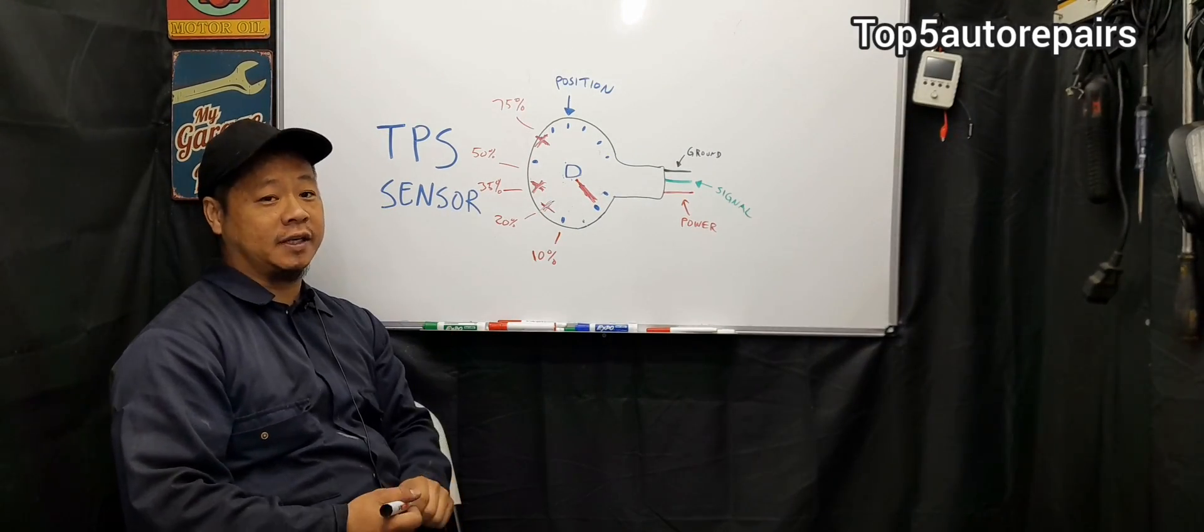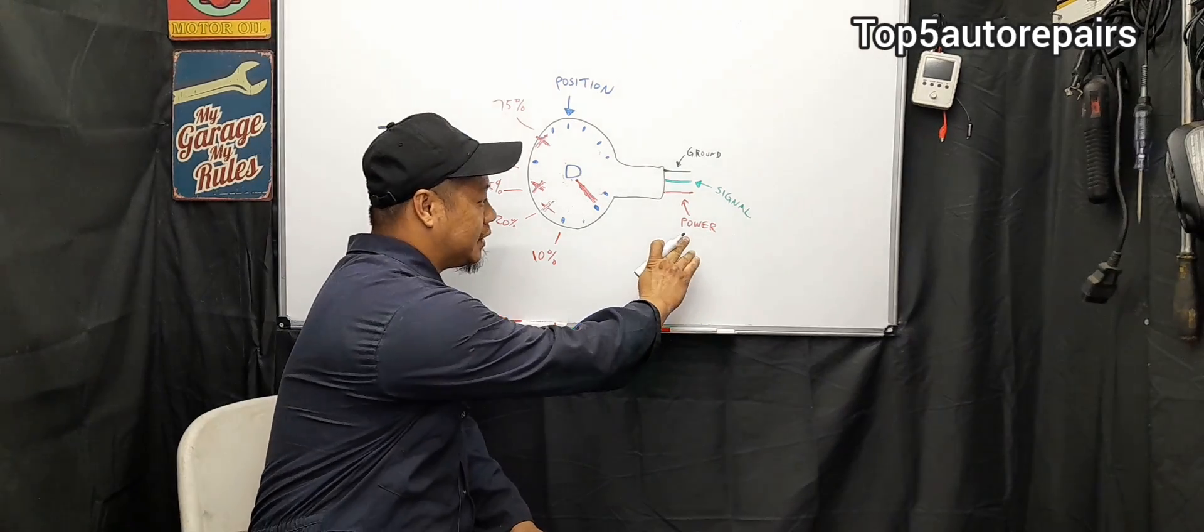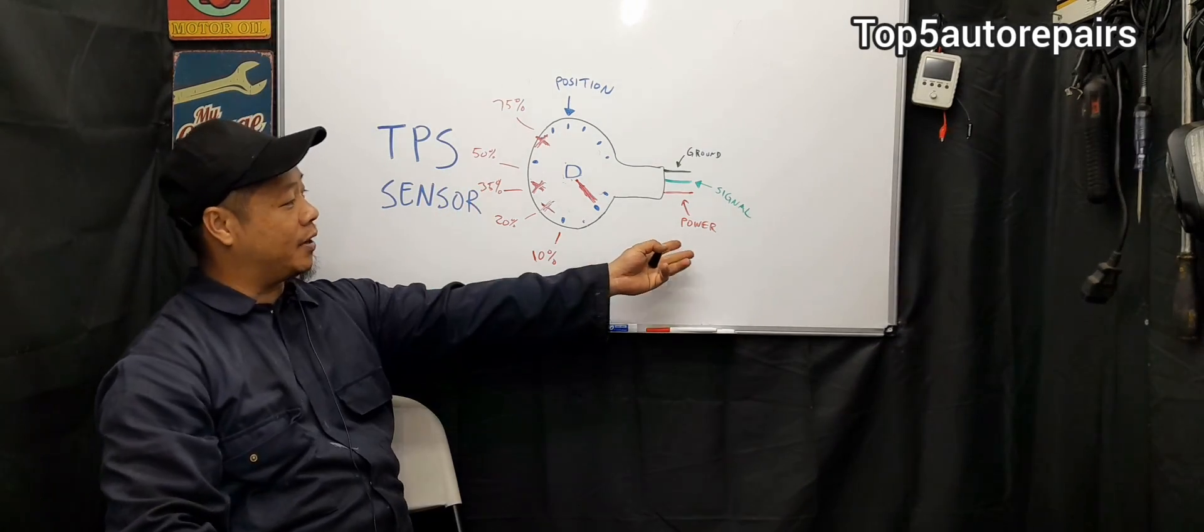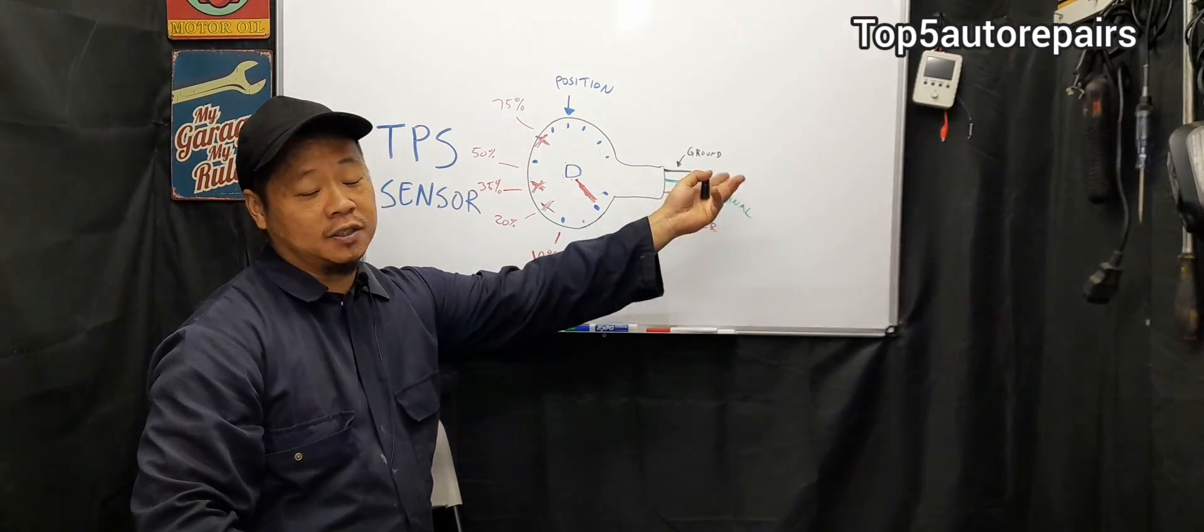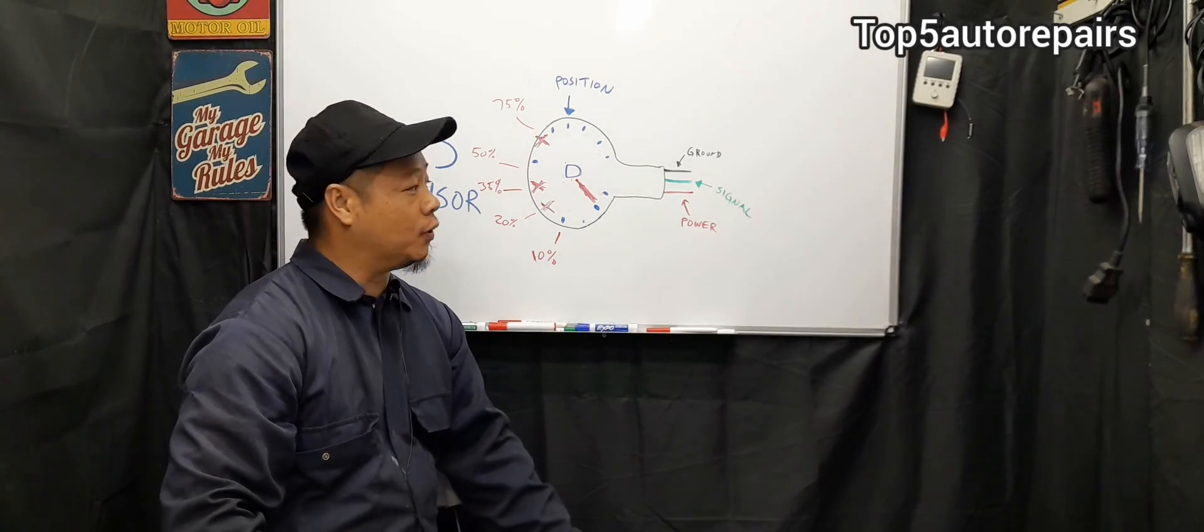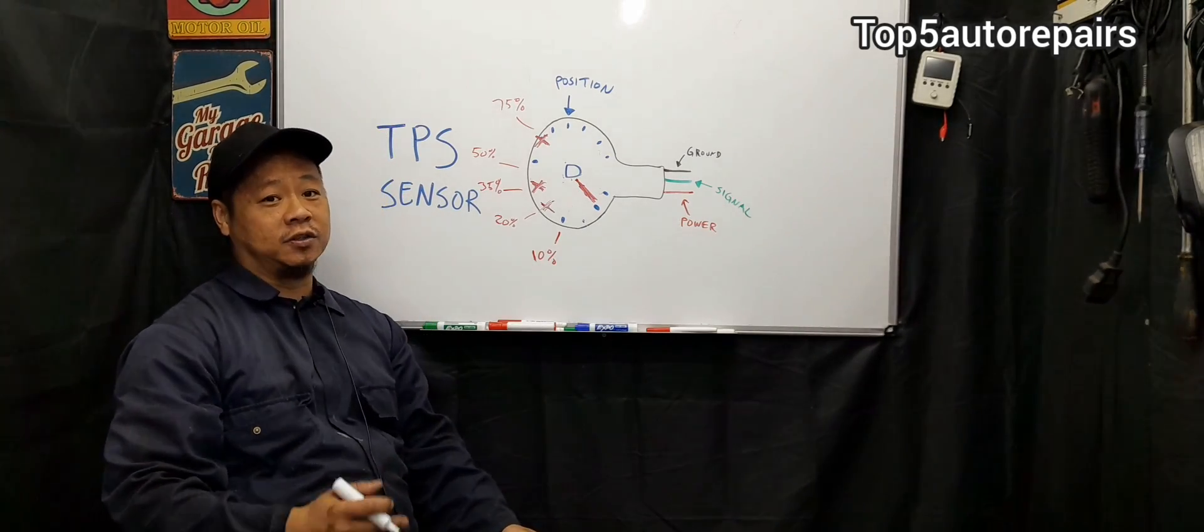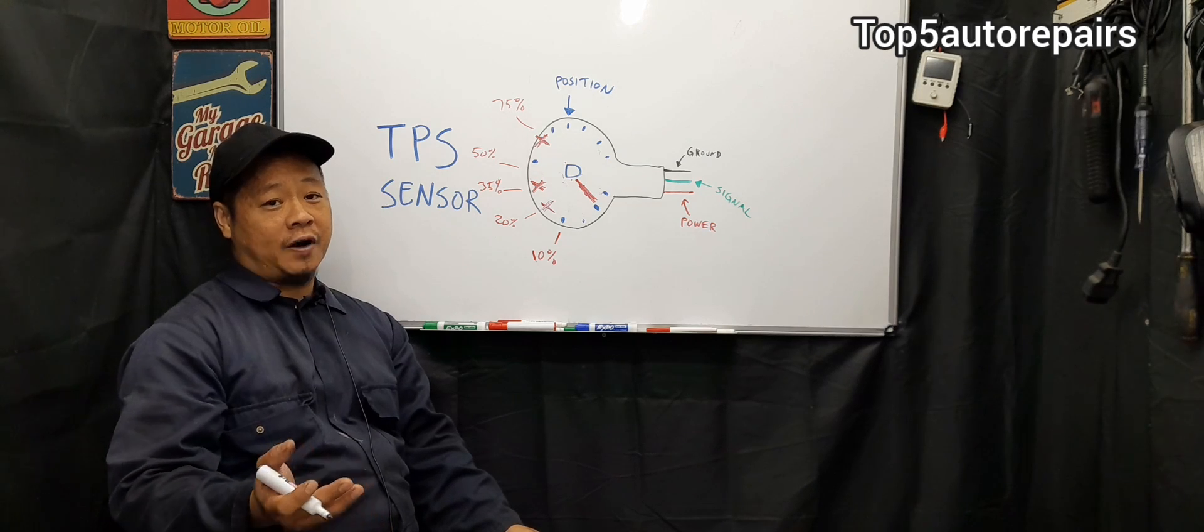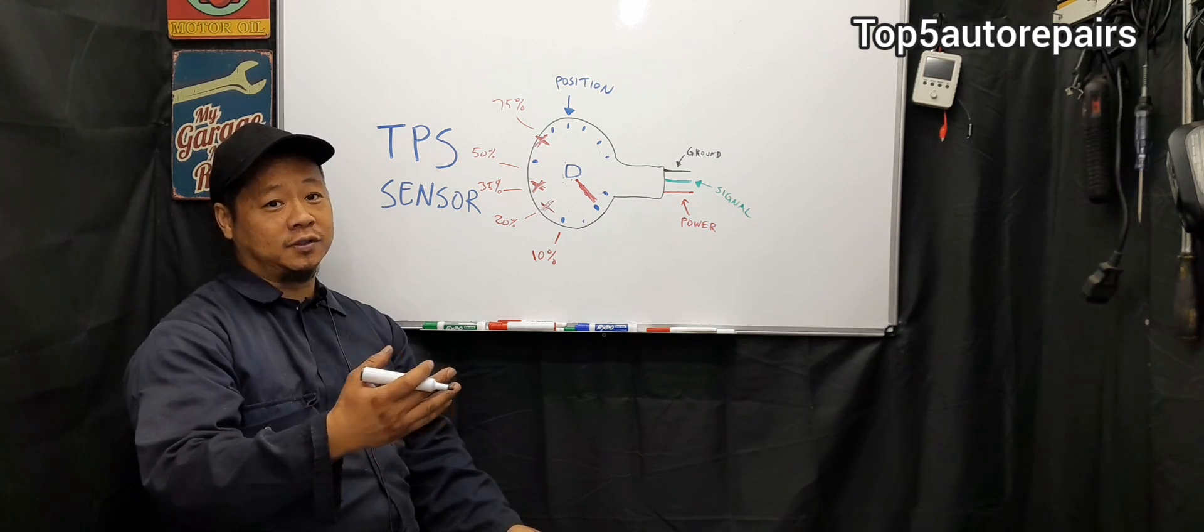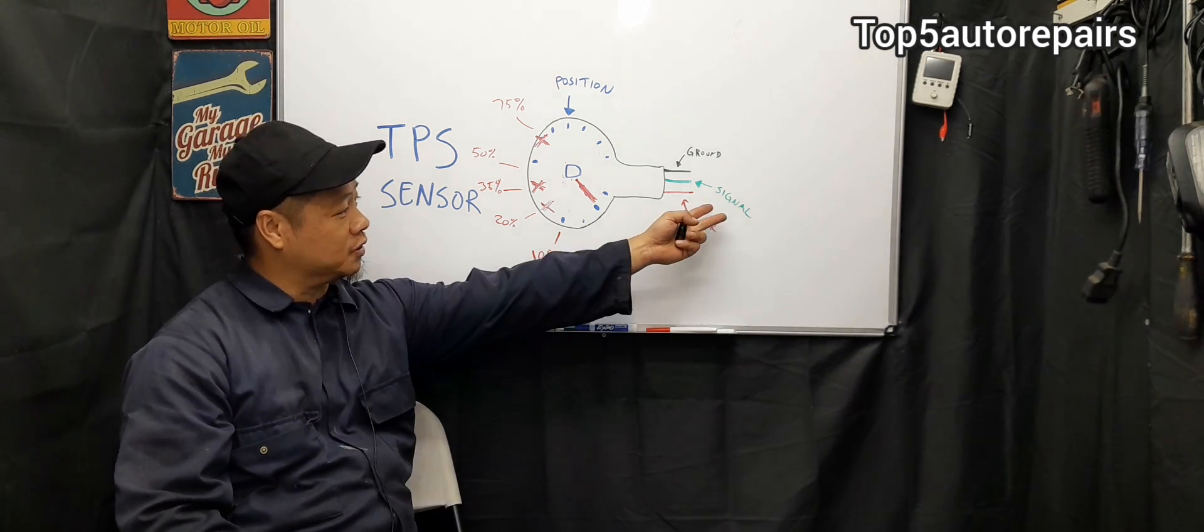There's three things you need to identify. The first thing you need to identify is the power, usually that's going to be battery voltage. Ground is going to show zero voltage, and the signal wire is going to show some sort of voltage, usually less than five volts. It's going to range between maybe one to about two volts or so.